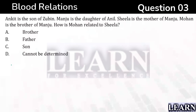Manju is the daughter of Anil, so I can say Anil is the parent and Manju is the daughter. I can eliminate the Ankit-Zubin pair. Then looking at the next clue: Sheila is the mother of Manju.